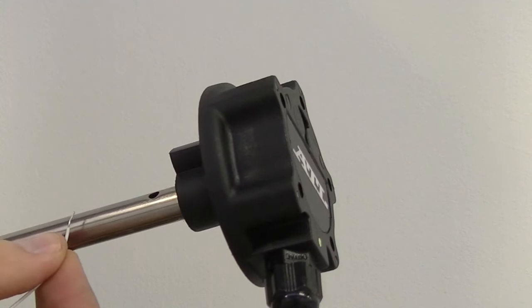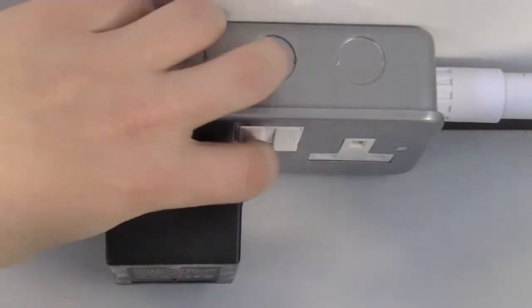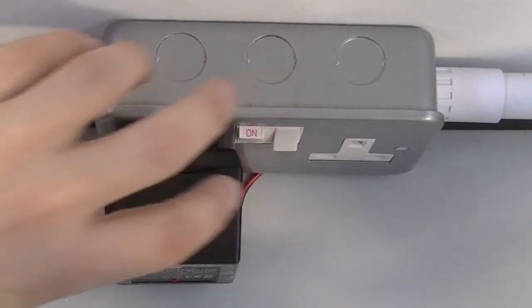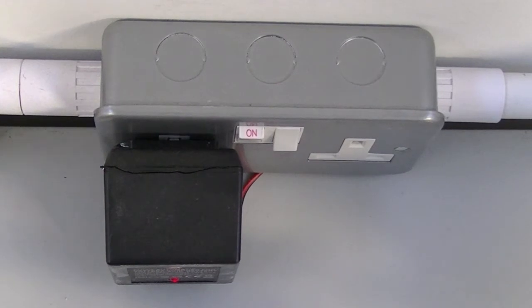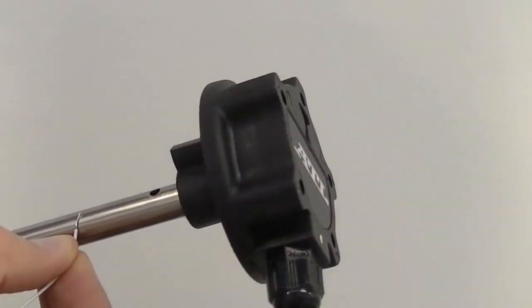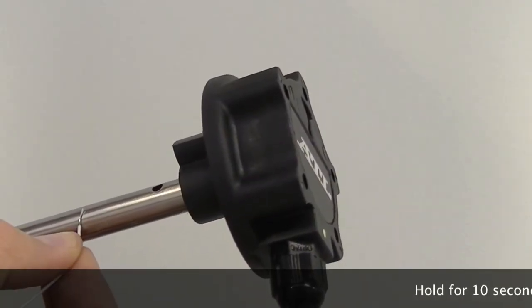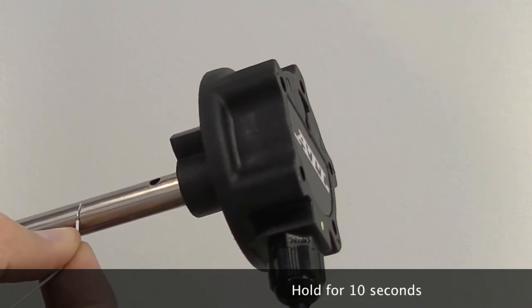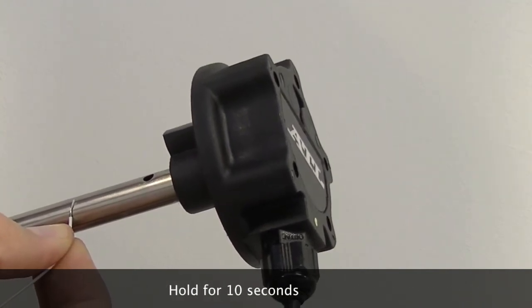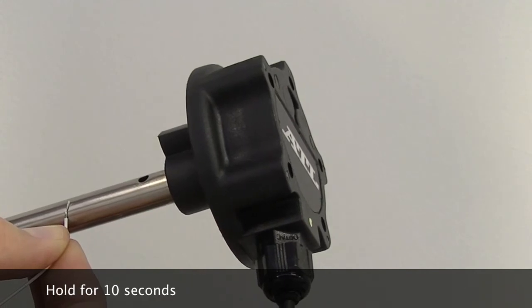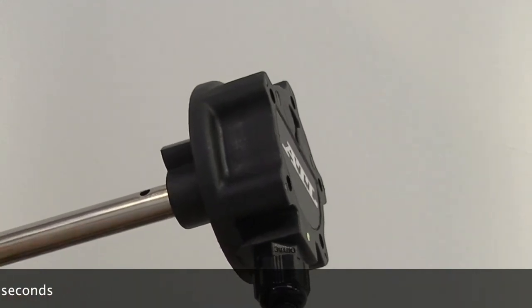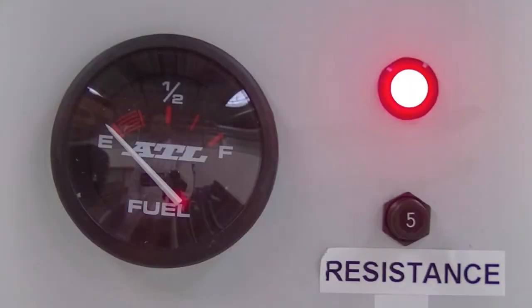Then place the white calibration wire against the sender tube and power back on the system. Hold the calibration wire against the sender tube for 10 seconds. This has calibrated the empty point of the sender.